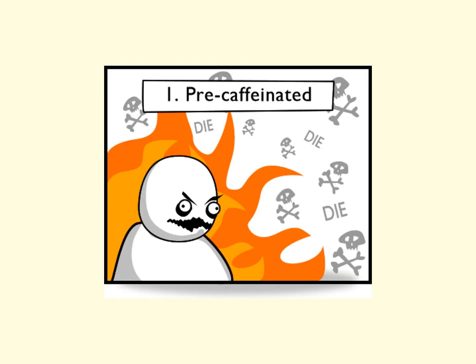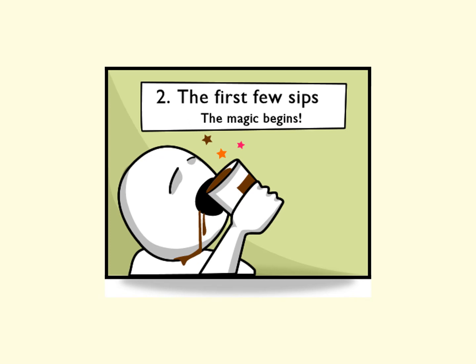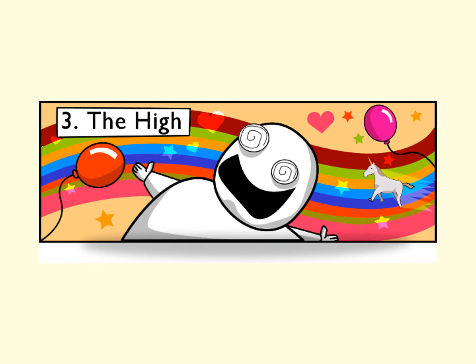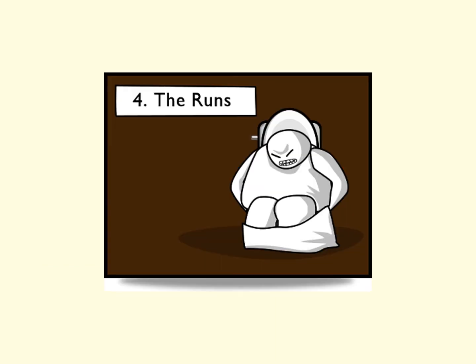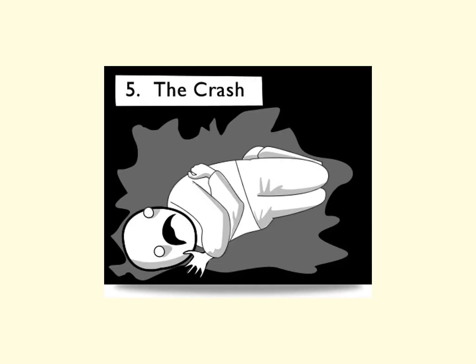Phase one: pre-caffeinated — you're angry, irritable, tired, you can't concentrate, you're in a bad place. Phase two: the first few sips and the magic of caffeine begins. Then there's the caffeine high, which for many people feels good. Then some of the effects of caffeine kick in. And then you have the post-caffeine crash, stage five. This accurately describes the kind of arc you go on when you consume caffeine.